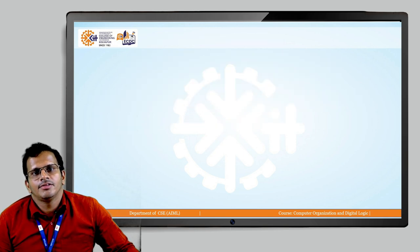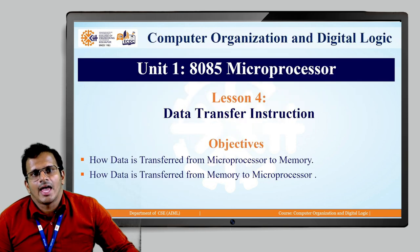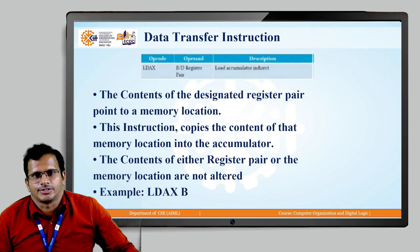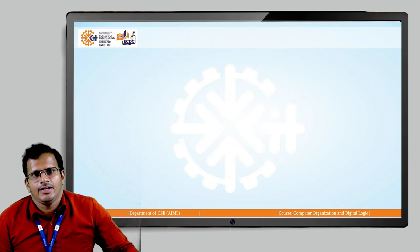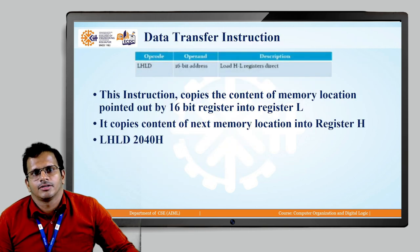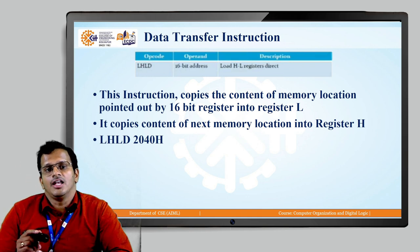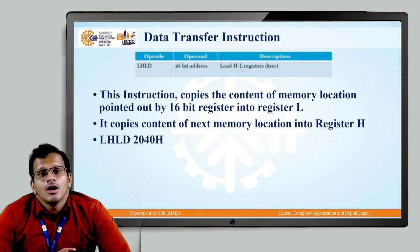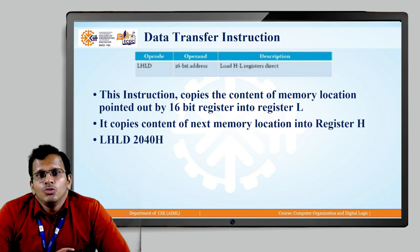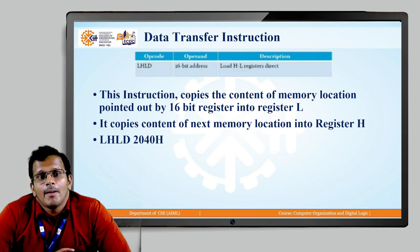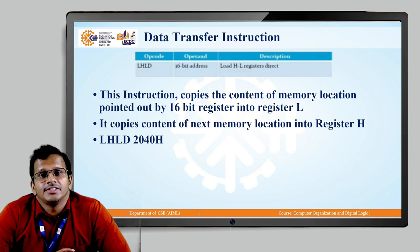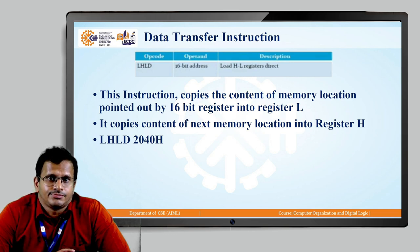We have seen both the LDAX and STAX instructions. The next instruction is LHLD, which copies the content of the memory location pointed to by a 16-bit address into the L register.